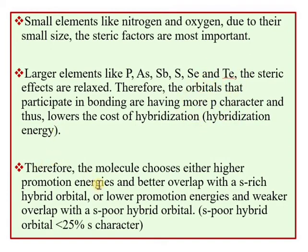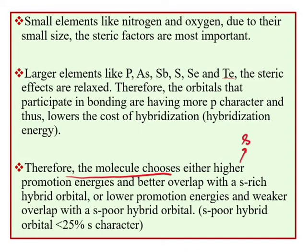The molecule chooses either higher promotion energy with better overlap using s-rich hybrid orbitals — as in the case of small elements like nitrogen where s and p orbitals mix, bringing s character into the bonding orbitals — or lower promotion energy with weaker overlap using s-poor (p-rich) hybrid orbitals, as in the case of large elements where p orbitals are used for bonding and hybridization energy is not required.